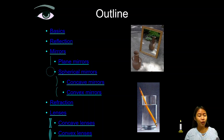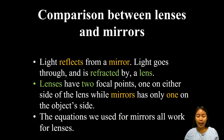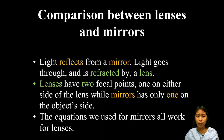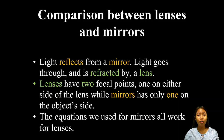Before we further study how light rays behave in mirrors and lenses, let us first compare the two. When we deal with the behavior of light in mirrors, it always reflects. In lenses, light always refracts — it passes through. For lenses, we have two focal points located on both sides of the lens, while mirrors have only one focal point located on the object's side.